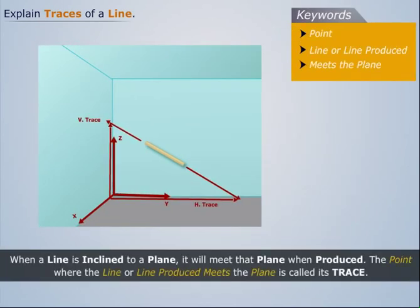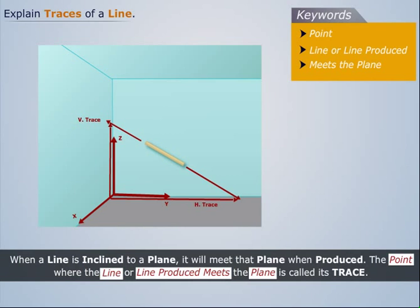Thus when a line is inclined to a plane, it will meet that plane when produced. The point where the line or line produced meets the plane is called its trace.